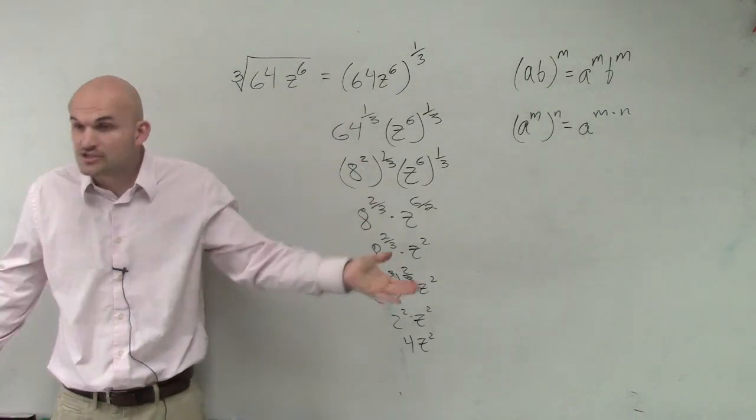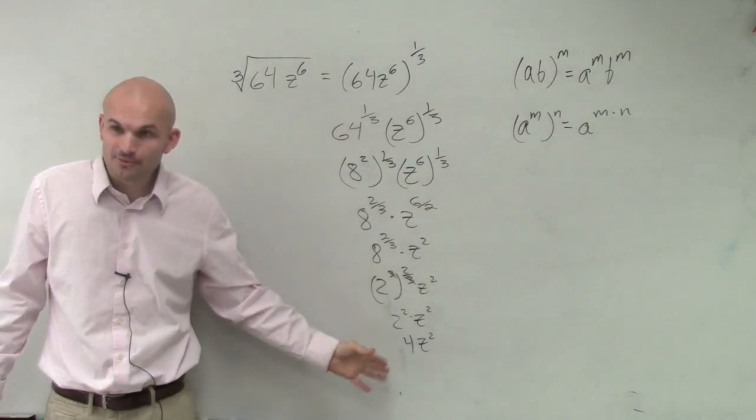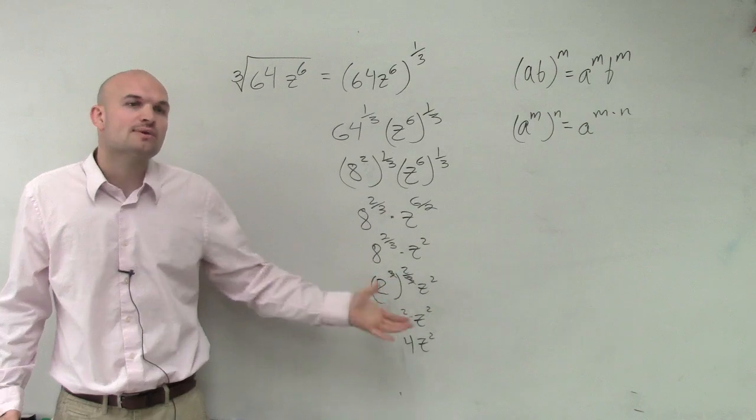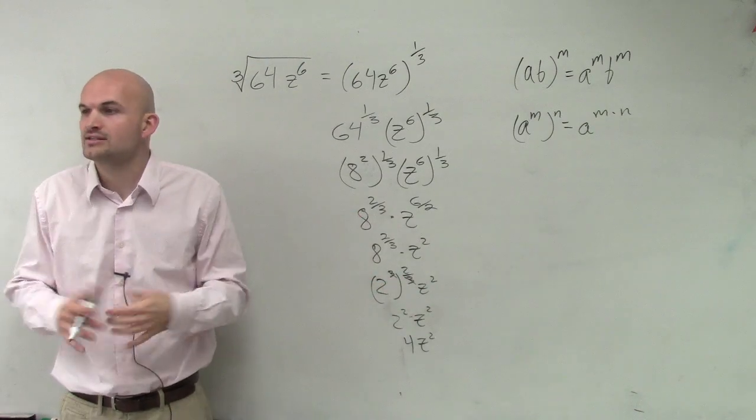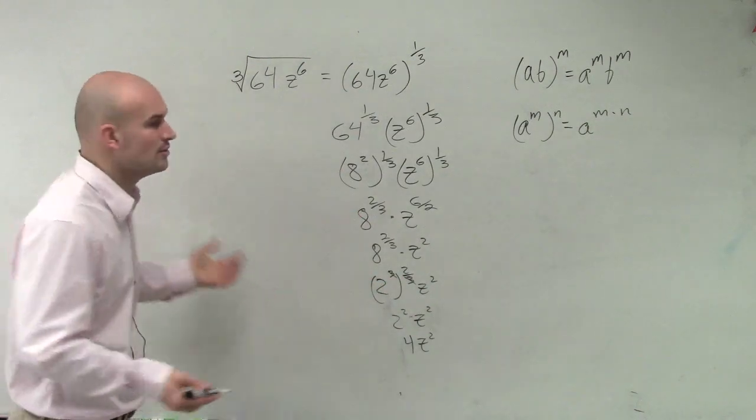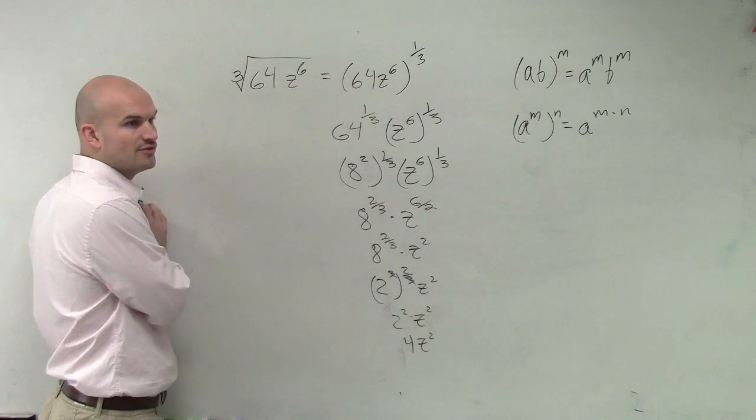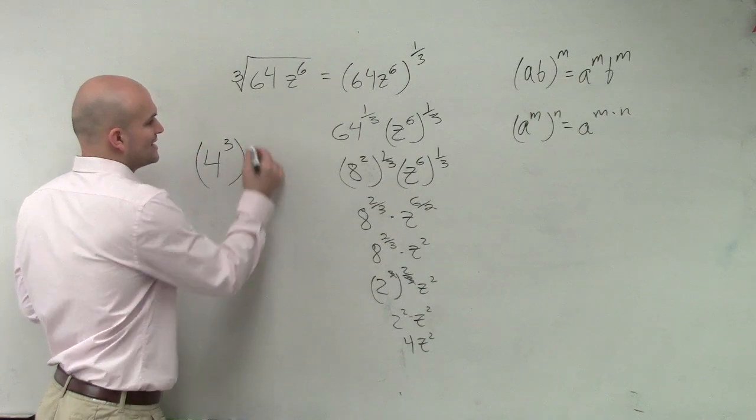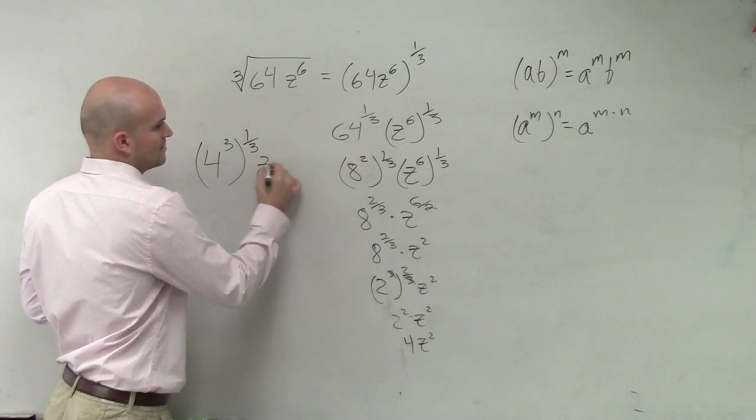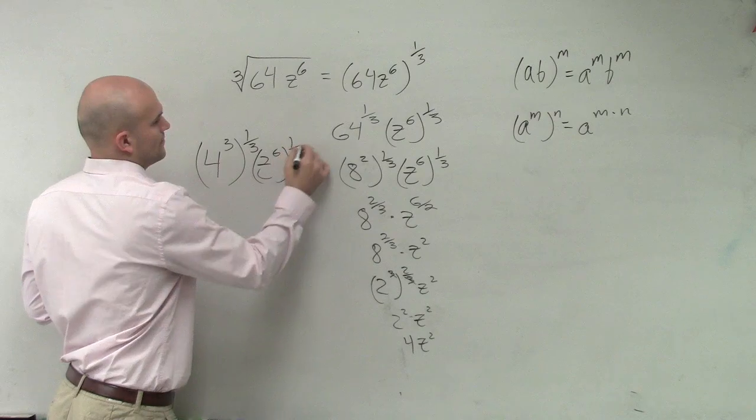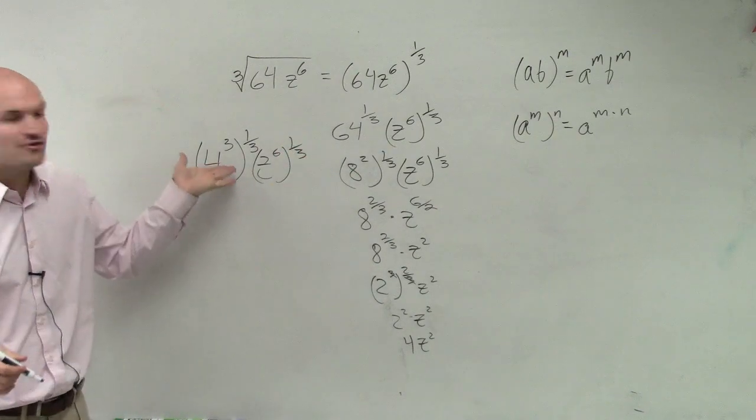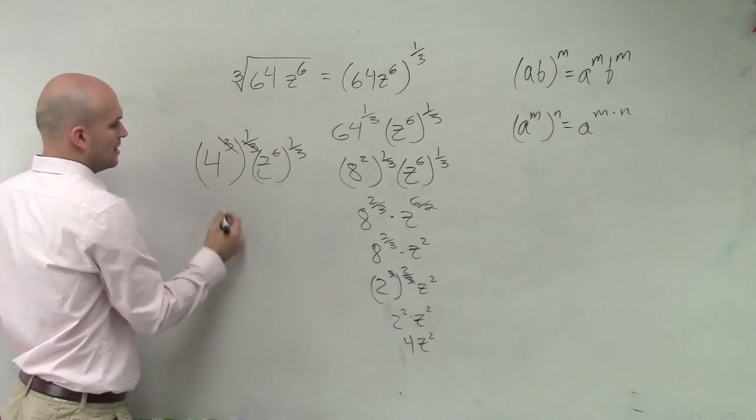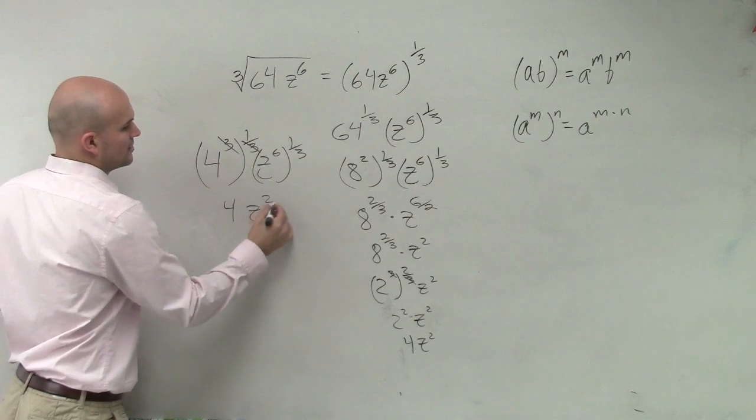Somebody said 8 squared, which is right. But then you need to keep on simplifying it though further. You always want to look at what would be the largest number, and somebody else said we could always write it to, what else? You could also do 4 cubed, right? So let's look at what if I would have done 4 cubed rather than 8 squared. They're both correct. But what I notice is when I do 4 cubed, I'm just left with 4z squared.